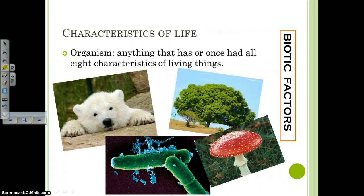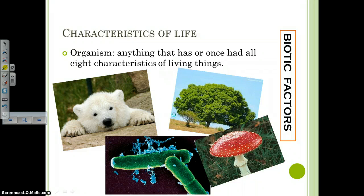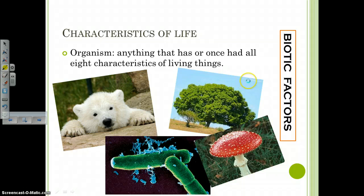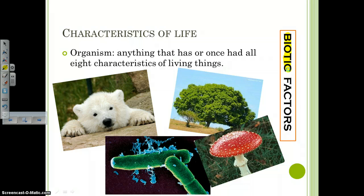Before we talk about the characteristics of living things, I want to give you a vocabulary term, and that term is organism. An organism means anything that has all of those eight characteristics, or at one point did have all of those eight characteristics. So an organism is another word for a living thing, or a biotic factor. A biotic factor is a living thing, and an abiotic factor is a non-living factor in an environment.